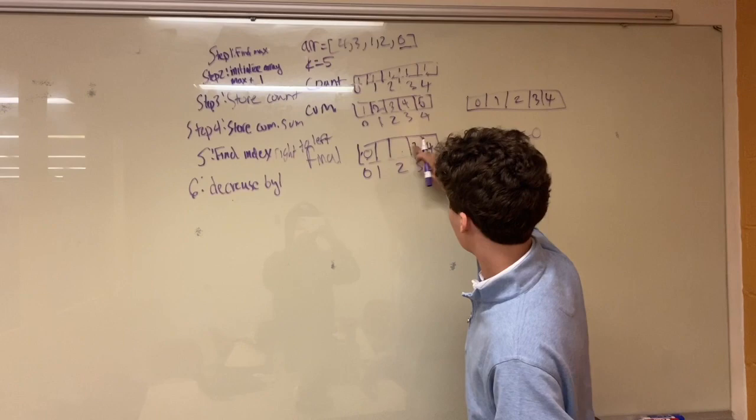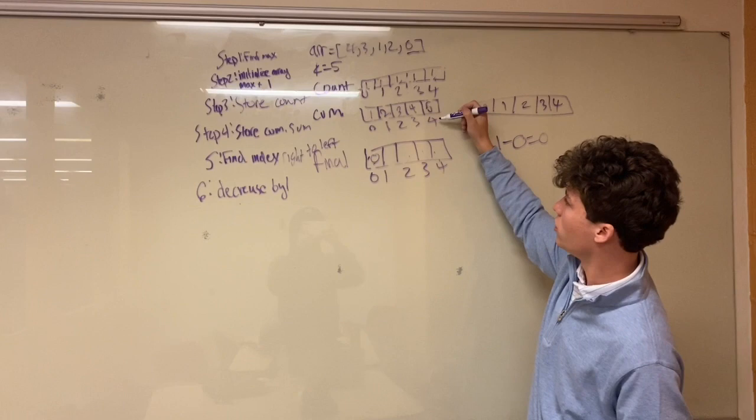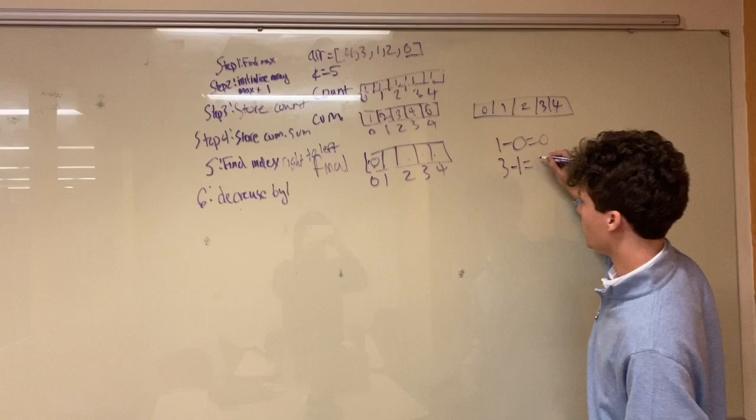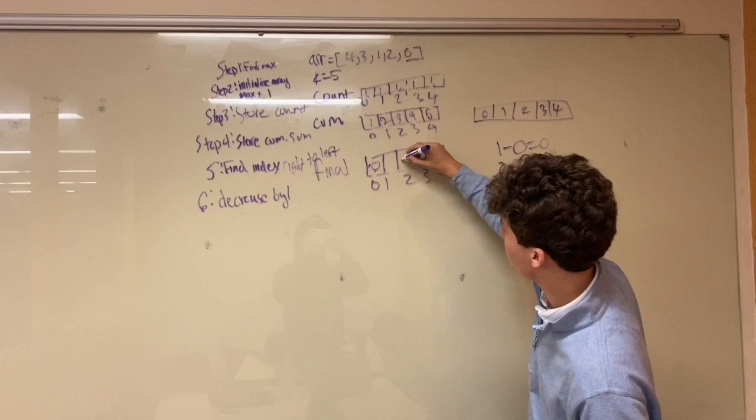All right. Now we go to 2. We find 2 on our cumulative sum, which is 3. And then we go 3 minus 1 equals 2. So now 2 is in our index for 2.